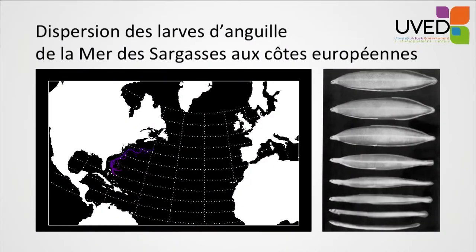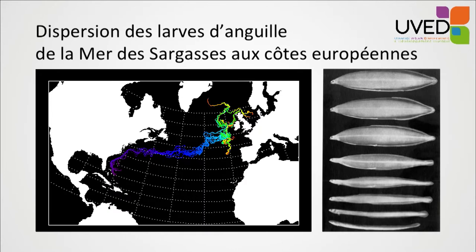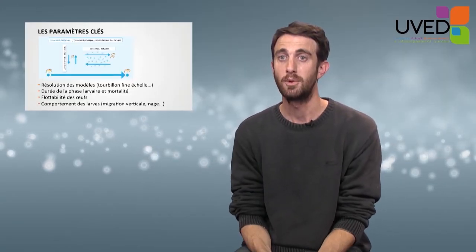Eel larvae dispersal is a good example. Adult eels live in all rivers from Norway to Morocco and in the Mediterranean. When they migrate to reproduce, they cross the Atlantic to reproduce in the Sargasso Sea south of the Bermudas, near Florida. Larvae are produced and, following a simulation, drift along the Gulf Stream and the North Atlantic drift. After one or two years, they reach the European and Mediterranean coasts. With such simulations, we can assess larvae dispersal, how long it takes, and where they arrive.